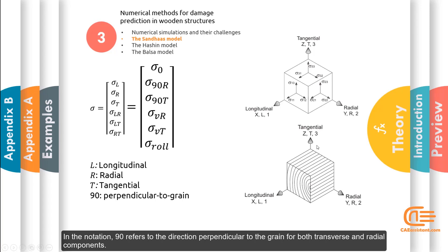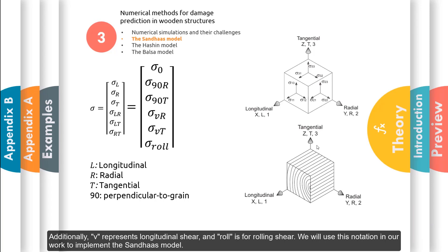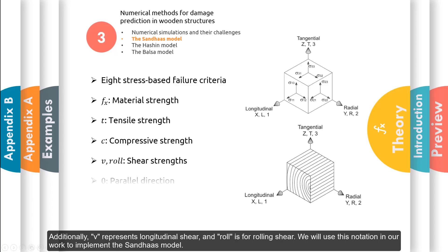In the notation, 90 refers to the direction perpendicular to the grain for both transverse and radial components. Additionally, V represents longitudinal shear, and roll is for rolling shear. We will use this notation in our work to implement the Sandhaus model.